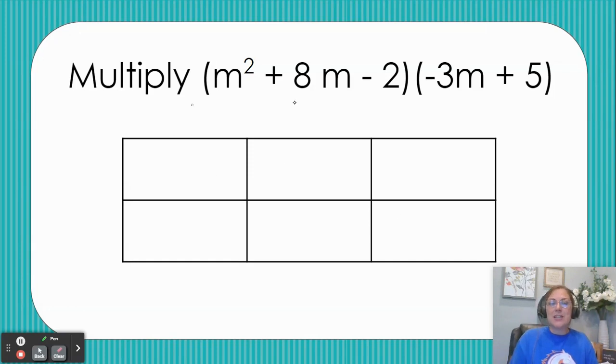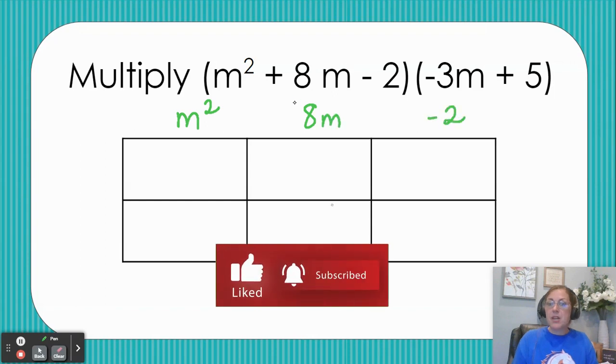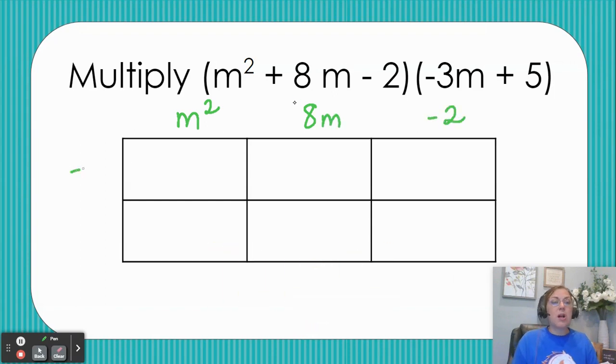So you can see my box here has three columns and two rows. So I'm going to take the three terms from the bigger parentheses, and I'm going to write them across the top. Then I'll take the two terms from the smaller parentheses, and I'll write them on the side.